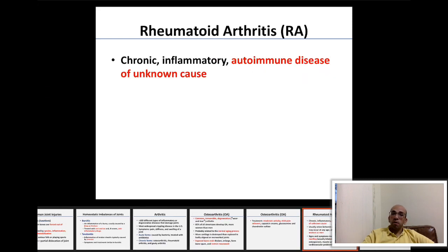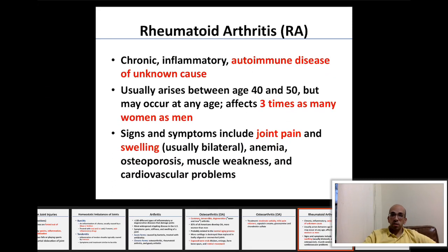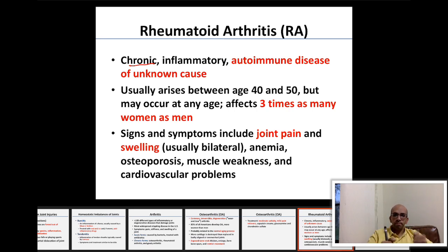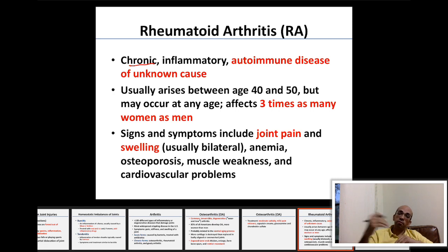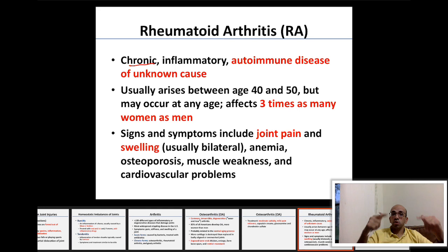Moving to rheumatoid arthritis: it is a chronic inflammatory autoimmune disease. 'Auto' means self, and autoimmune means the immune system is attacking your own tissues — rather than attacking foreign pathogens, the immune system starts recognizing self-antigens as non-self and attacks itself.